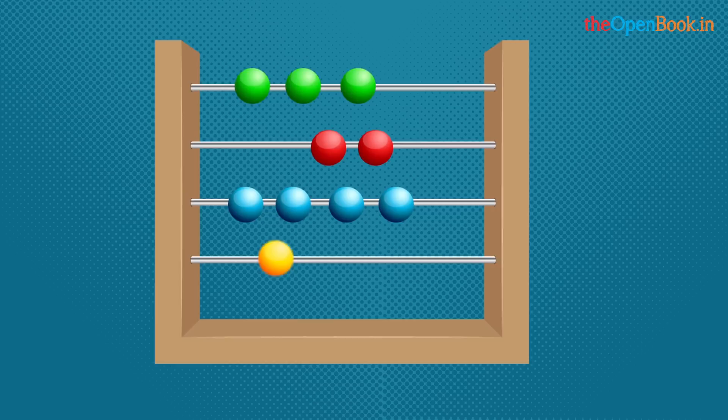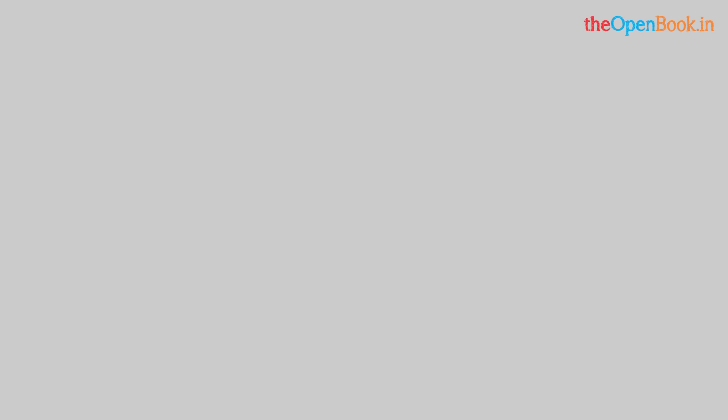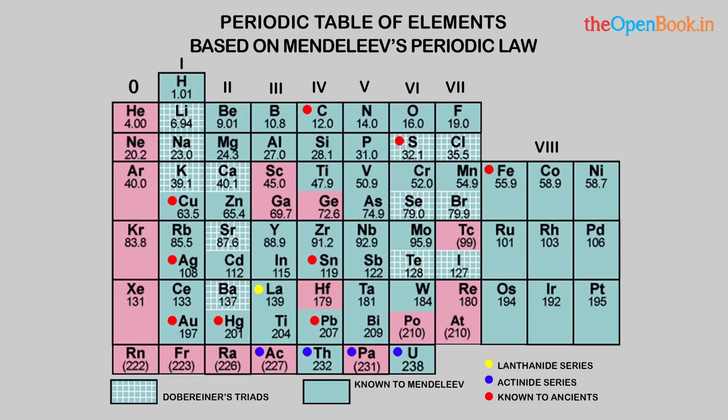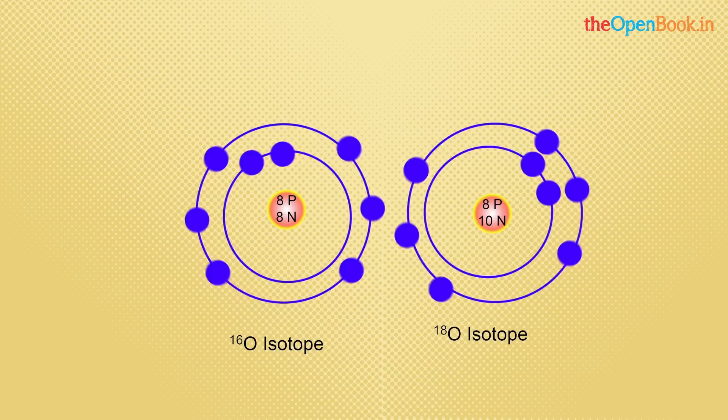Mendeleev's Periodic Table (1869): Mendeleev arranged elements in increasing order of atomic weights in the form of a table called Mendeleev's periodic table. He stated that properties of elements were periodic functions of their atomic weights. However, this method could not justify the position of certain elements, rare earths, and isotopes.